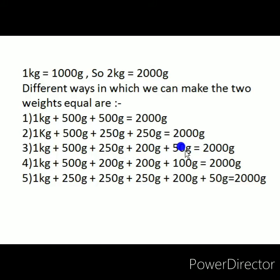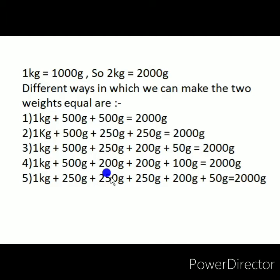The third way: 1 kg plus 500 gram plus 200 gram plus 150 gram... totalling 2000 grams. This is the third way of equalizing both pans. The fourth way: 1 kilogram plus 500 gram plus 200 gram plus 200 gram plus 100 gram — adding all these weights together gives 2000 grams. This is the fourth way of combining weights to make 2000 grams.